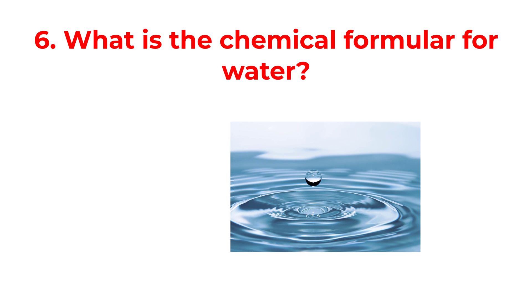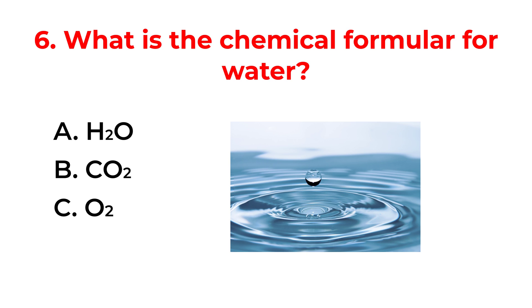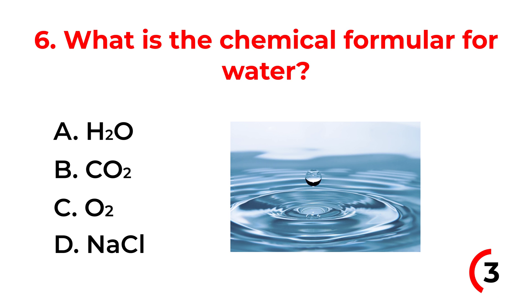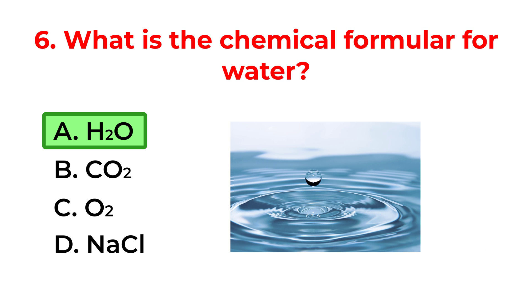What is the chemical formula for water? A. H2O. B. CO2. C. O2. D. NaCl. The correct answer is option A: H2O.